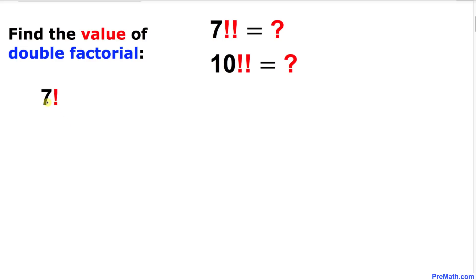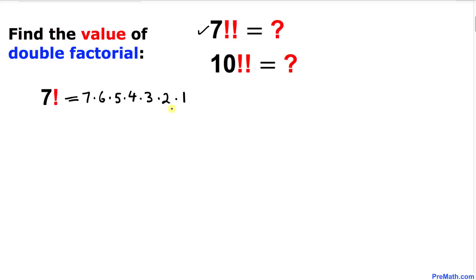Let's start with 7 factorial first, before we do the double factorial of 7. We know that 7 factorial could be written as 7 times 6 times 5 times 4 times 3 times 2 times 1. Pretty simple, isn't it?